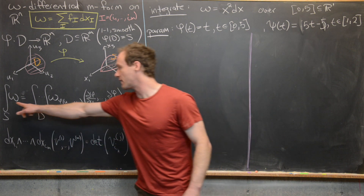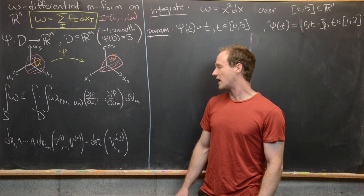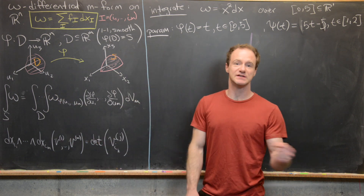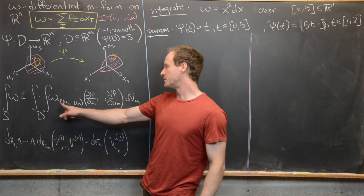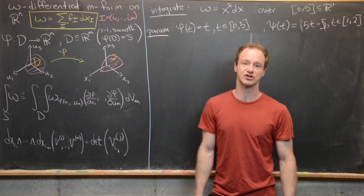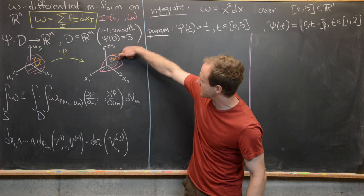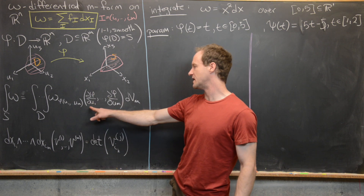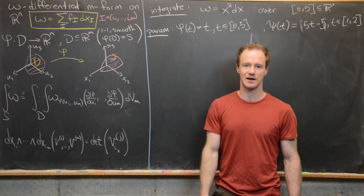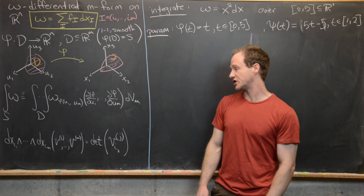Evaluating the integral of the differential m-form omega over the hypersurface S is equivalent to evaluating the m-fold integral over D of omega after its two-step process: first, it's evaluated at a point on that hypersurface — phi of u1 up to um — and then evaluated at a bunch of tangent vectors to that hypersurface, namely partial phi with respect to u1 all the way up to partial phi with respect to um.